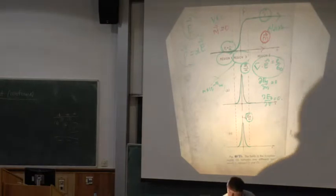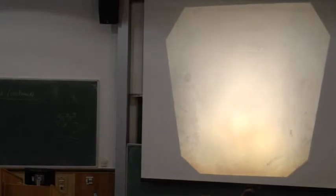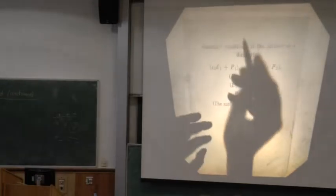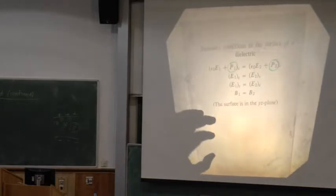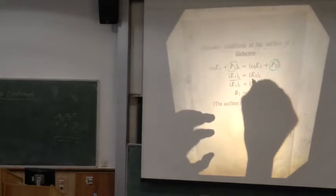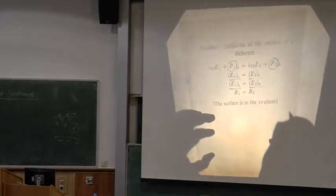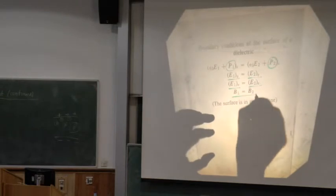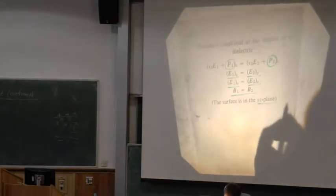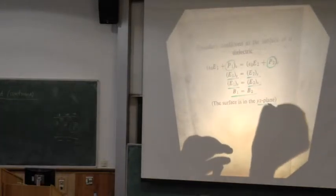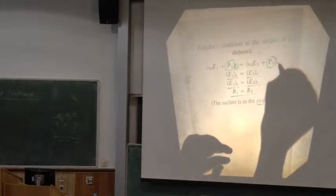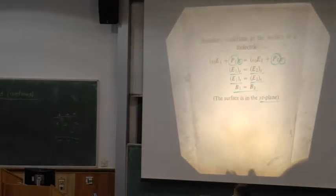There's a little table here showing the boundary conditions. The y component of the E field is equal on both sides of the interface; the z component is equal on both sides. For a non-magnetic material, the whole surface is in the yz plane and the normal is the x direction — the only discontinuity we need to watch is in the x direction. So that sets it all up.